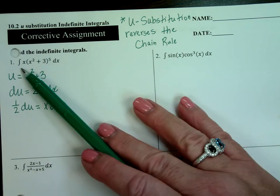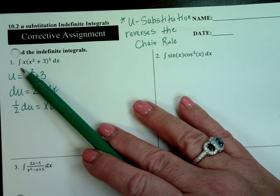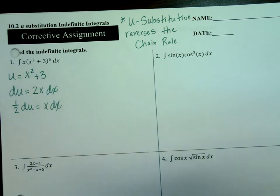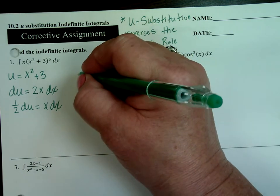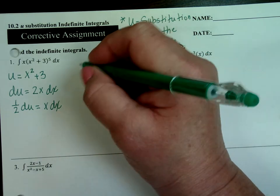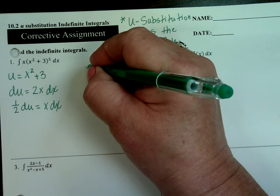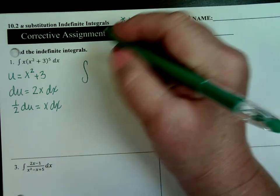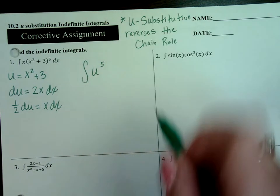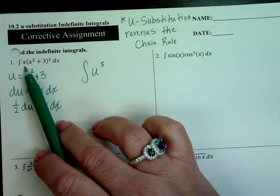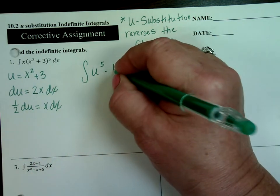These first ones are without bounds — I'll ask you in a few minutes how that affects the answer. So here's my substitution: I'm setting up my integral with u raised to the 5th power, and then the x and dx are represented by one-half du.